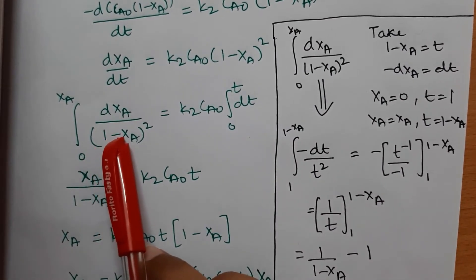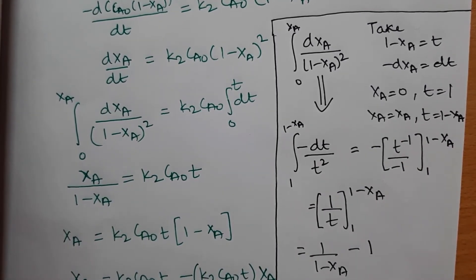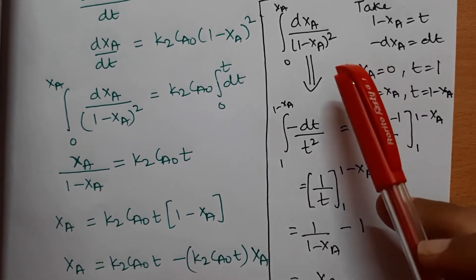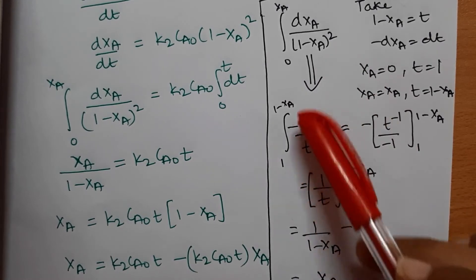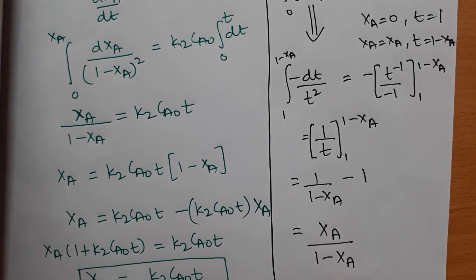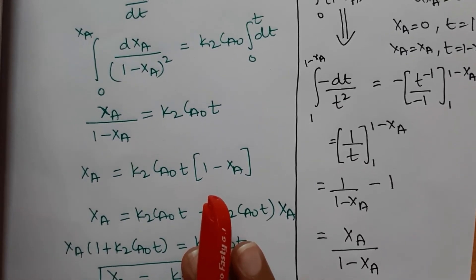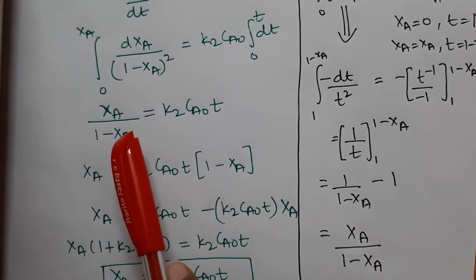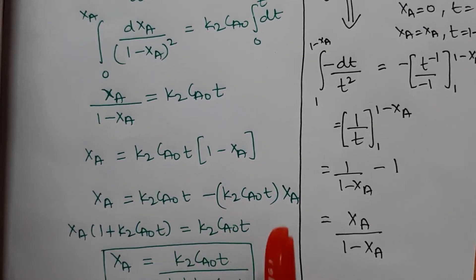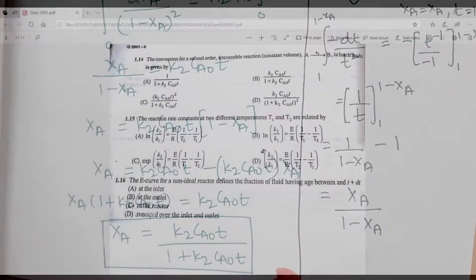To solve these integrals, substitute (1 − XA) = u, change the limits, and solve — this is basic calculus. After solving, we get XA/(1 − XA) = K₂·CA0·t. Therefore, the conversion is XA = K₂·CA0·t / (1 + K₂·CA0·t).